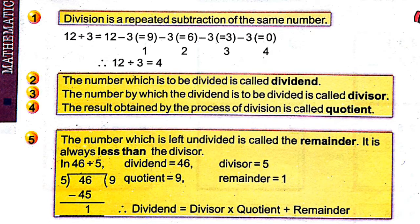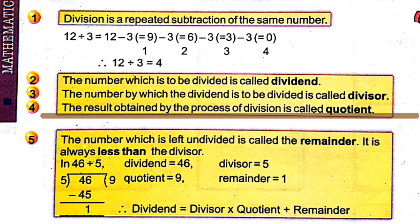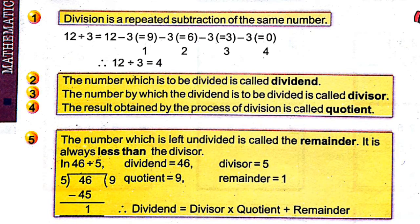Fact number 4: the result obtained by the process of division is called the quotient. In the example, 12 is divided by 3 and we get the answer 4, so 4 is the quotient.